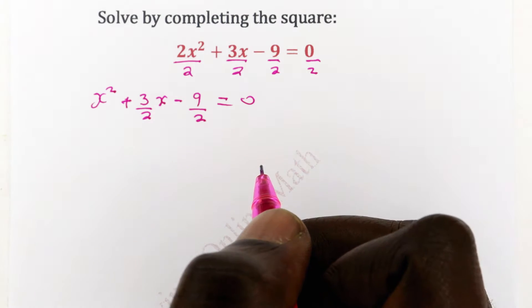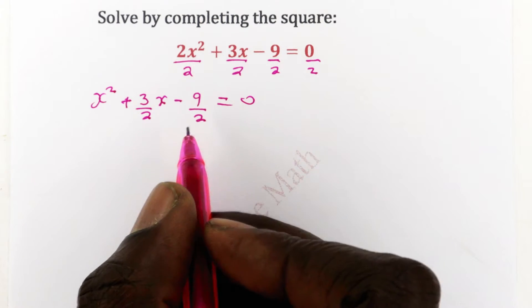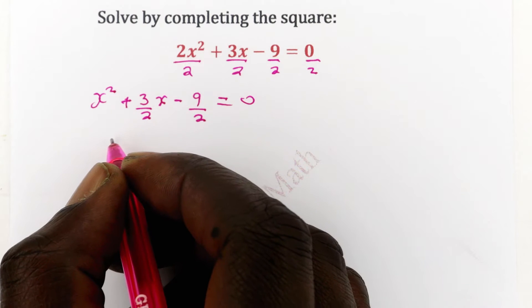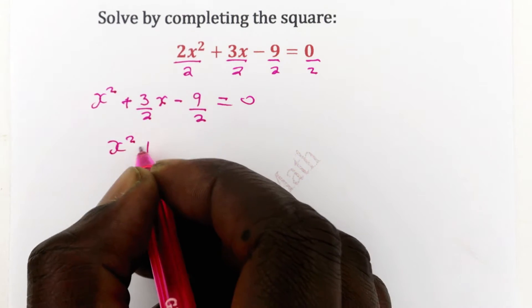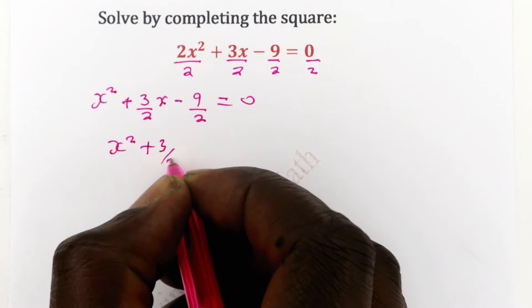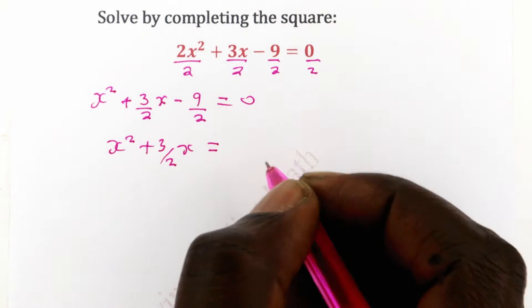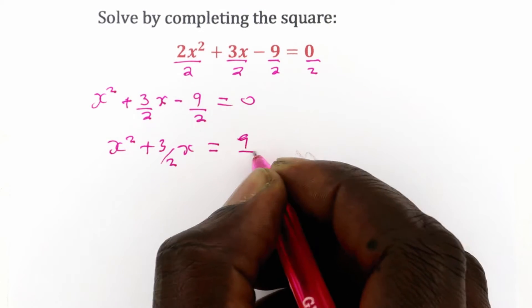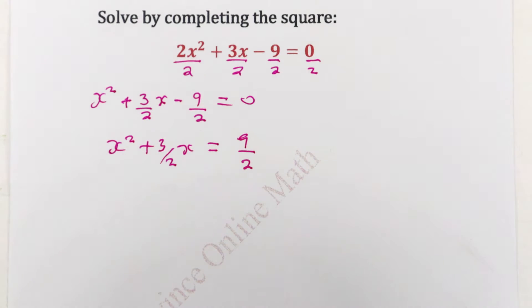The next step will be to move the constant term, that is c, to the right hand side. So that you have x squared plus 3 over 2x is equal to — we take it to the other side, it becomes positive — so we have that equal to 9 over 2.